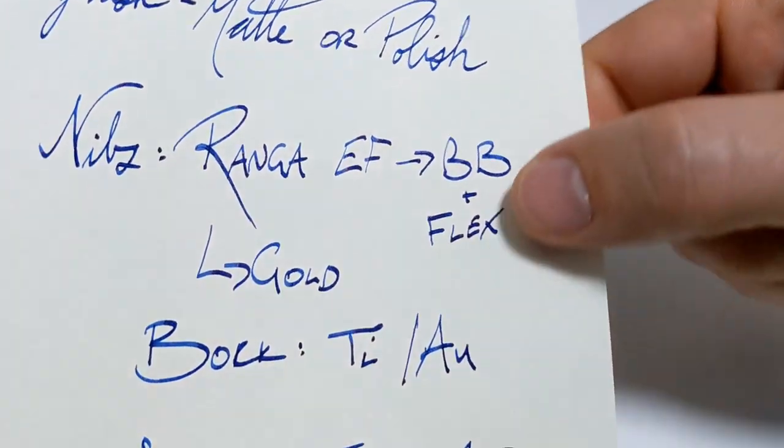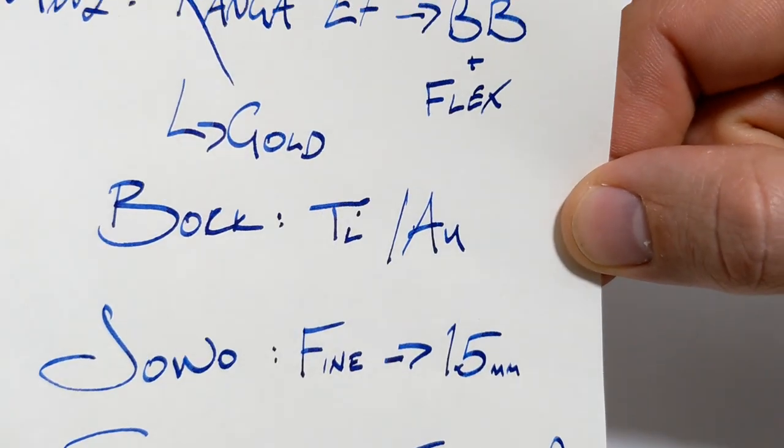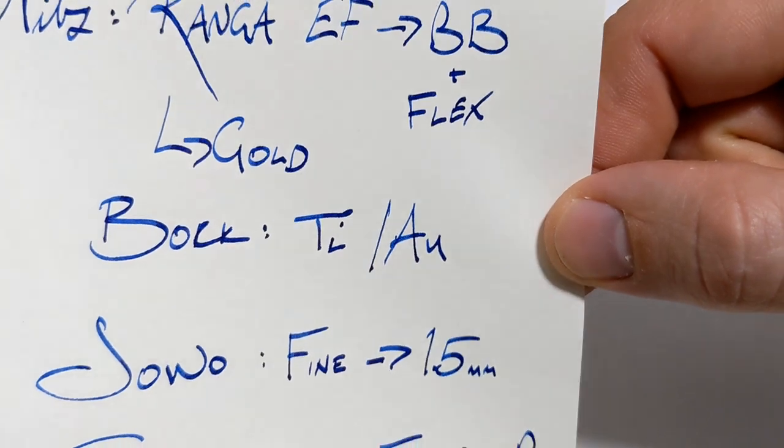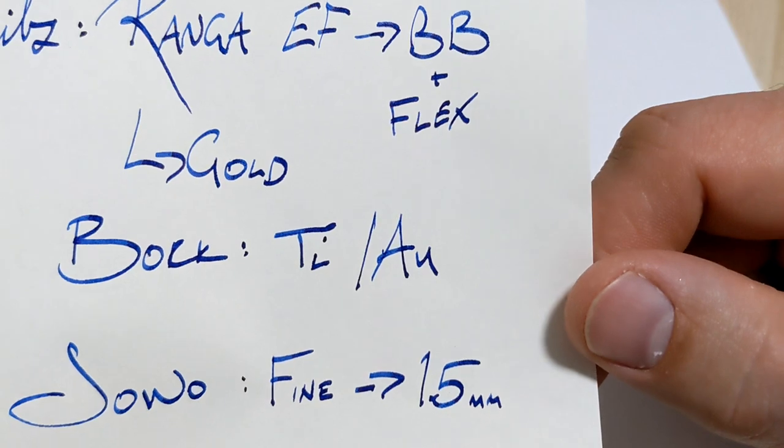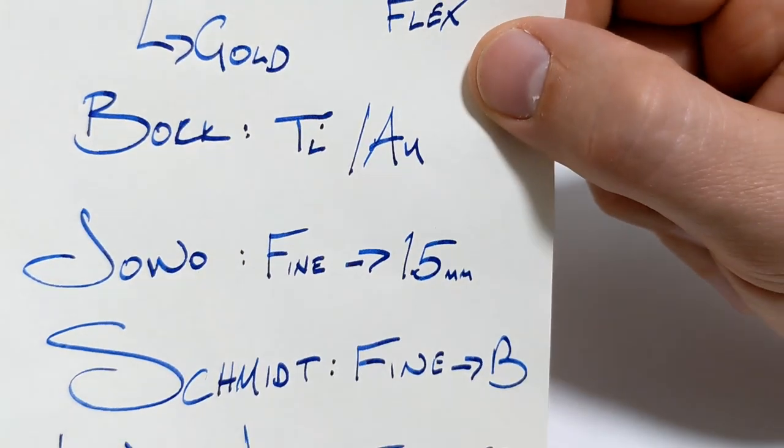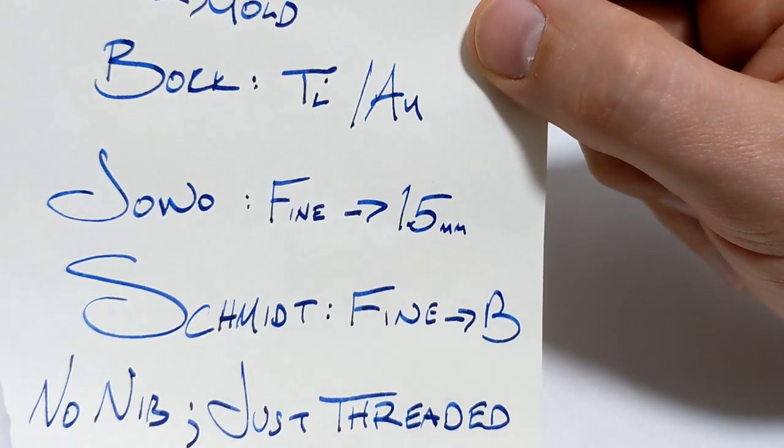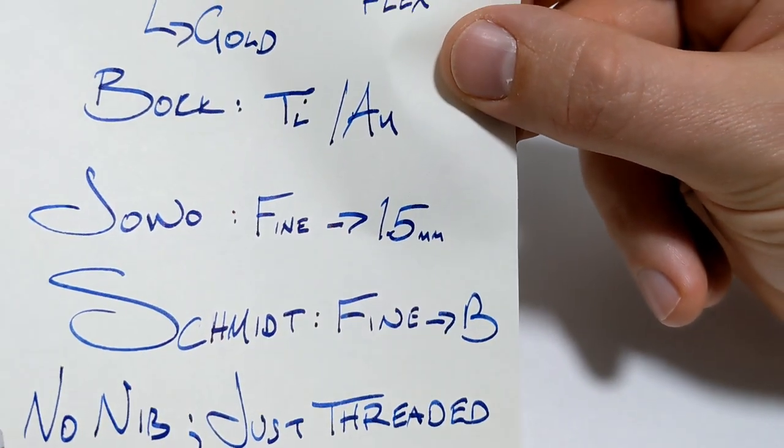You can get Bock nibs, titanium or gold. That's right, periodic table of elements. You got to remember that, the Yovo nib or Jovo, you could say whatever you want. Everyone gets so uppity about how to say things properly. Whatever works for you, fine. All the way up to 1.5, Schmidt fine to broad, or just naked, no nib.